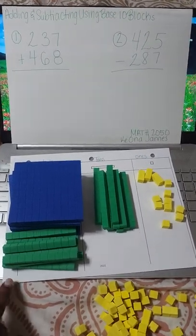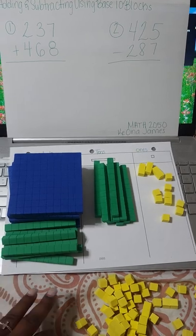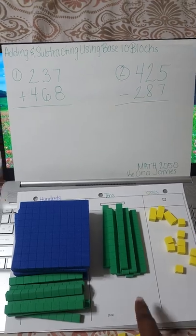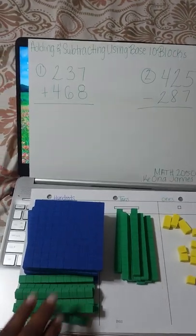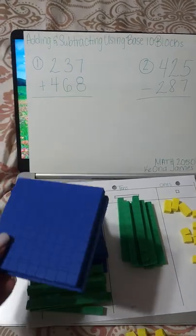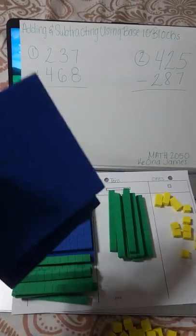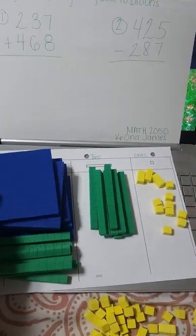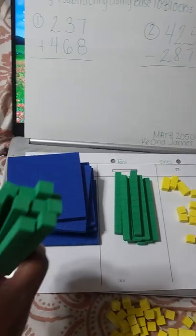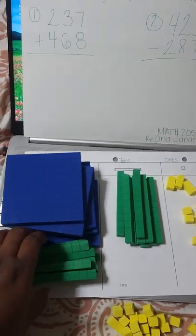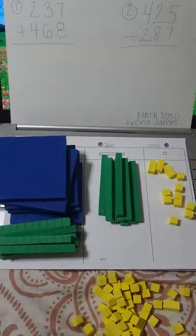Off camera I went ahead and added all the rest of the places. So we added our six to our tens, and we also added four to our hundreds. We only had three more of the hundred blocks, so I went ahead and added ten of the tens blocks because ten tens equals one hundred.